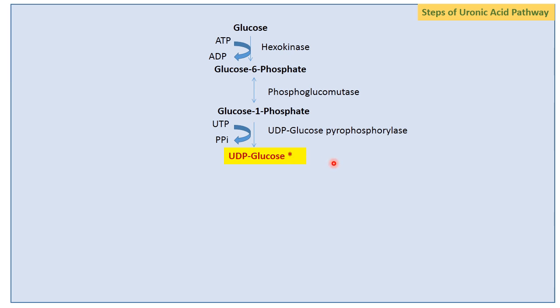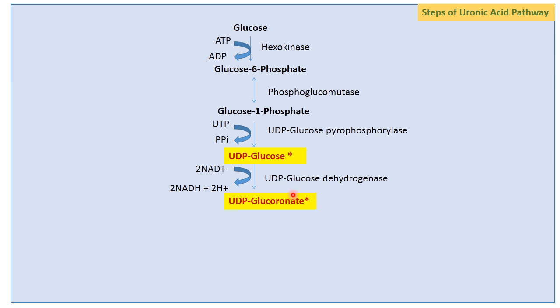UDP glucose may further go to glycogenesis or galactose metabolism. UDP glucose is further converted to UDP glucuronate, catalyzed by the enzyme UDP glucose dehydrogenase. UDP glucuronate can then be converted to D-glucuronate via the enzyme glucuronidase.